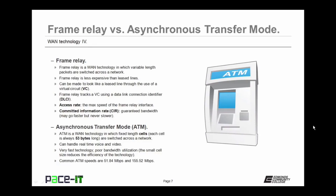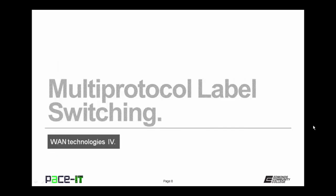Asynchronous Transfer Mode — ATM — is a WAN technology in which fixed-length cells are switched across the network. These cells are always 53 bytes long. ATM can handle real-time voice and video because it's very fast, but it has poor bandwidth utilization — the small cell size reduces efficiency. Common speeds on an ATM network are 51.84 megabits per second and 155.52 megabits per second.